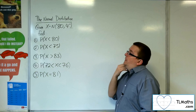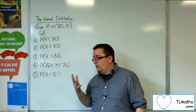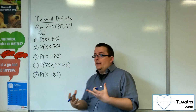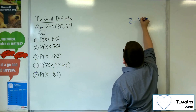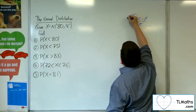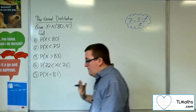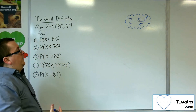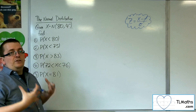Question 1: find the probability that X is less than 80. What I want to get you used to knowing is that formula: Z equals X minus mu over sigma. This is the formula that we need to memorise for the normal distribution. The first thing to do with normal distribution problems is to draw a diagram.